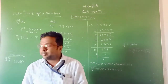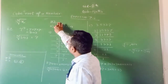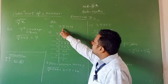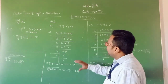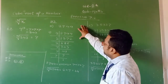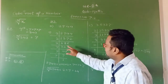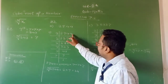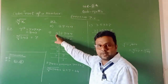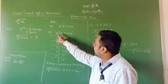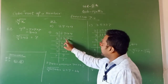Here I take an example from question number 3. The number given is 2744. To find out the cube root of this number, first we find out the prime factors. 2744 is an even number, so it is divisible by 2, the first prime number. After division, we get 1372.